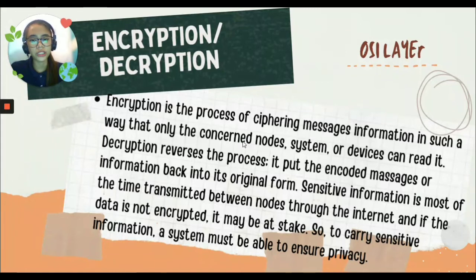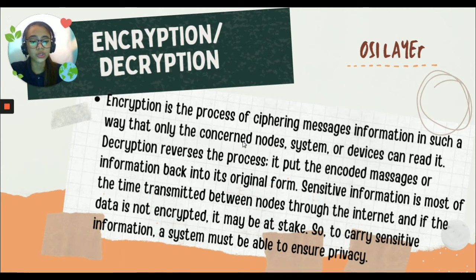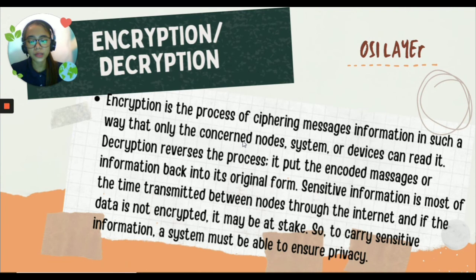For the last function of the presentation layer, we have encryption or decryption. Encryption is the process of ciphering message information in such a way that only the concerned nodes, systems, or devices can read it. Decryption reverses the process — it puts the encoded message or information back into its original form. Sensitive information is most often transmitted between nodes through the internet, and if the data is not encrypted, it may be at risk. To carry sensitive information, a system must be able to ensure privacy, so encryption is used to maintain the integrity of data before transmission.